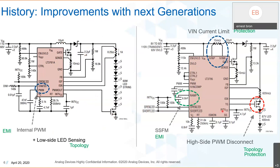Other features that came along include spread spectrum. High-side PWM disconnect sounds trivial, but it has a nice side effect: you can attach one side of the LED string to chassis ground and just run one cable to the remote LED string, rather than two wires, simplifying wiring in automotive applications.